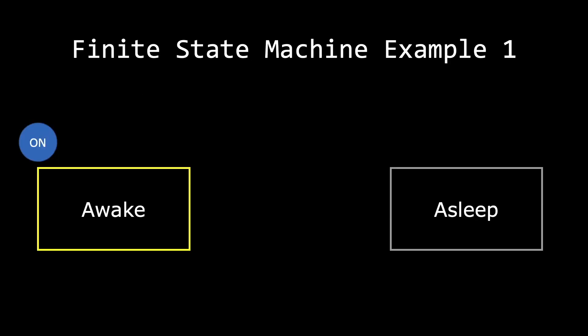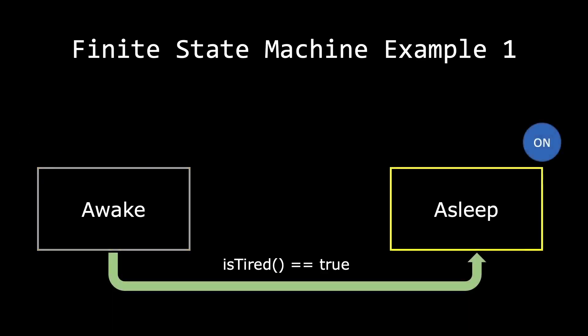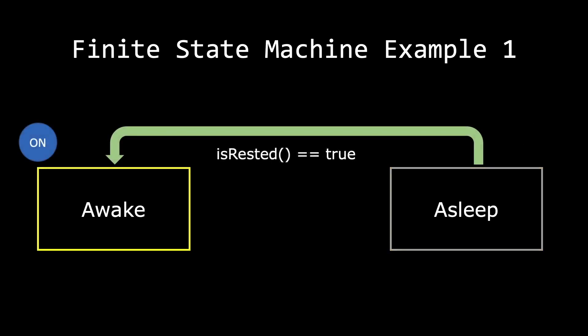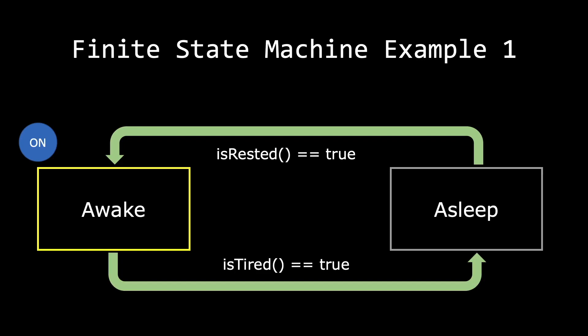A quick example. In this case, we have two states: an awake state and an asleep state. We are awake because our is_tired function returns back false. However, what happens if is_tired becomes true? Well, we change from the awake state into the asleep state.